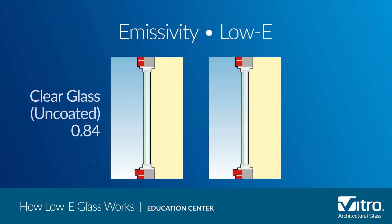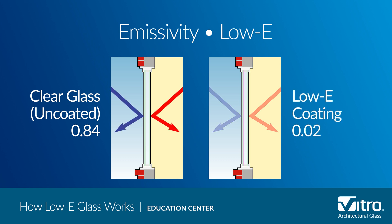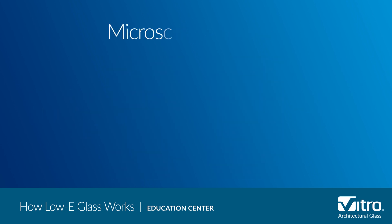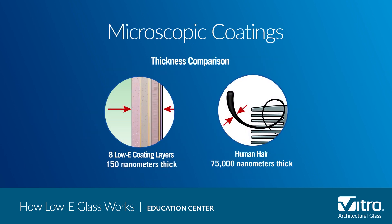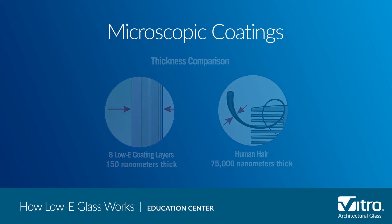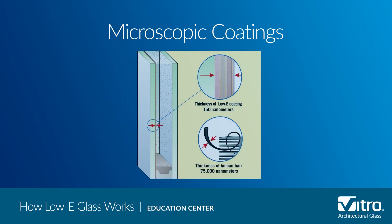For example, uncoated glass has an emissivity of 0.84, while Solar Band 70 Solar Control low-e glass has an emissivity of 0.02. Low-e glass is a microscopically thin transparent coating that reflects long-wave infrared energy, or heat. Some low-e coatings also reflect significant amounts of short-wave solar infrared energy, but we'll get to that later.